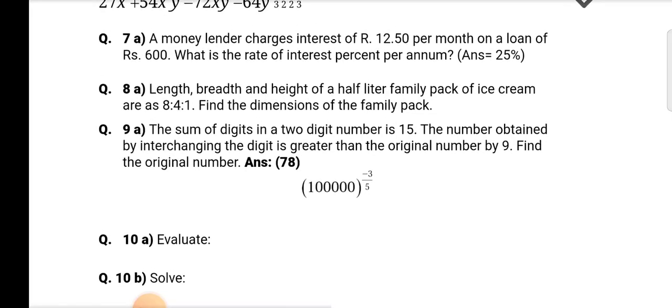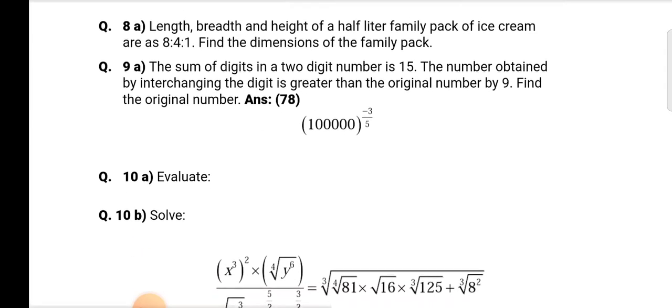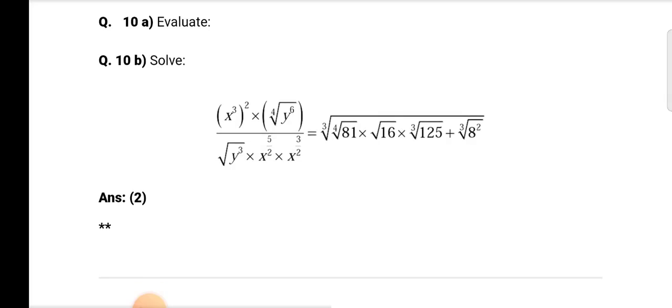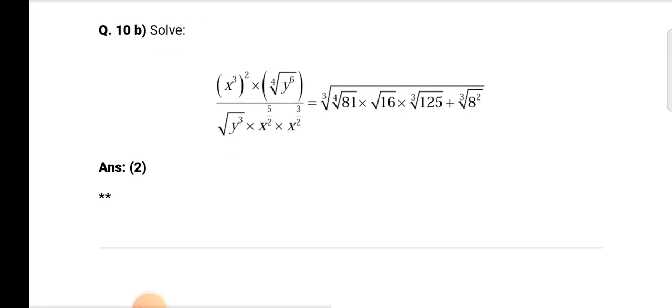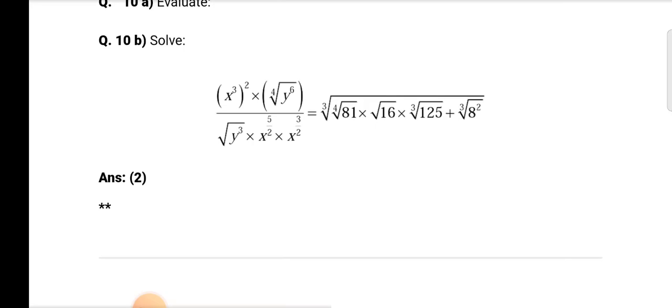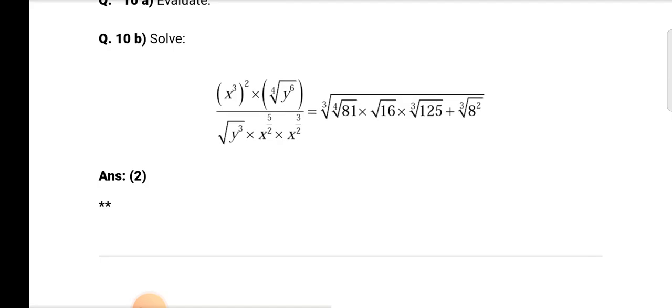Question 10b: Solve, in the first bracket x cube raised to 2 into 4th root of y raised to 6 in another bracket, divided by root y cube into x square into x square x raised to 3 by 2, equal to 3 root 4, root 81 into root of 16 into cube root of 125 plus cube root of 8 square. Answer is 2.